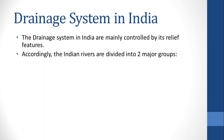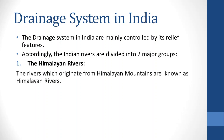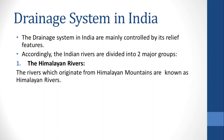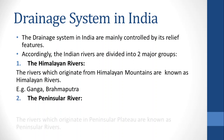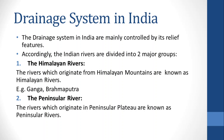Accordingly, the Indian rivers are divided into two major groups. First, Himalayan rivers — the rivers which originate from the Himalayan mountains are known as Himalayan rivers. Examples: Ganga, Brahmaputra, Indus. Second, Peninsular rivers — the rivers which originate in the Peninsular Plateau are known as Peninsular rivers. Examples: Mahanadi, Narmada, Godavari.